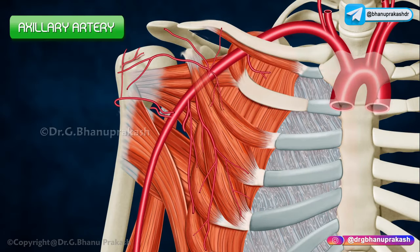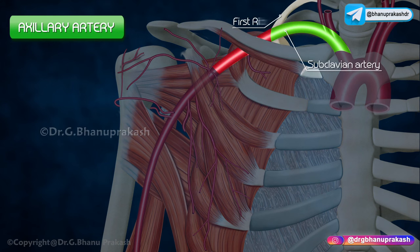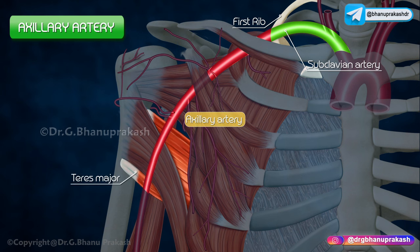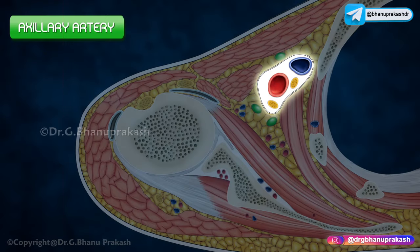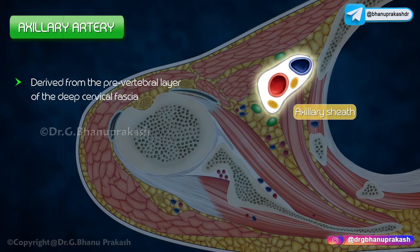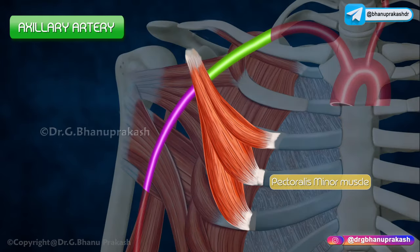The axillary artery begins as a continuation of the subclavian artery at the outer border of the first rib and ends at the lower border of the teres major, where it continues as the brachial artery. It is accompanied throughout its course by the axillary vein and is enclosed in a fascial sheath — the axillary sheath — which is derived from the pre-vertebral layer of the deep cervical fascia. It is split into three parts by the pectoralis minor muscle.